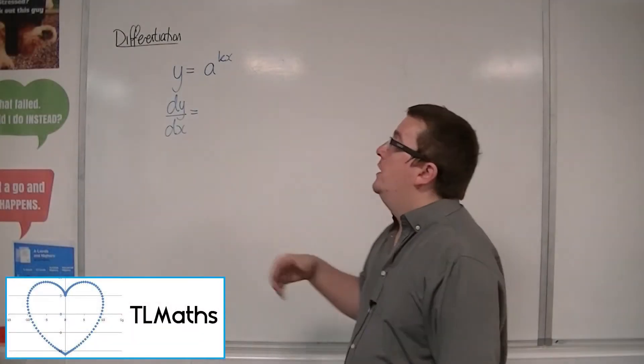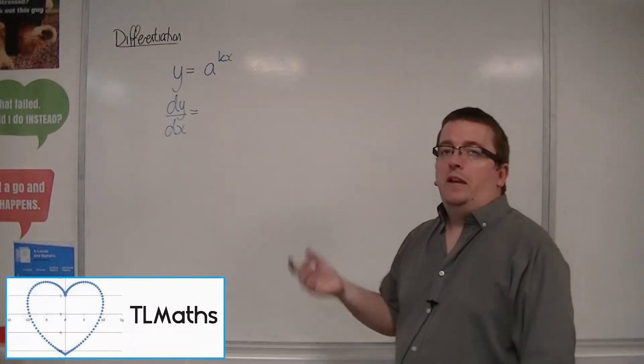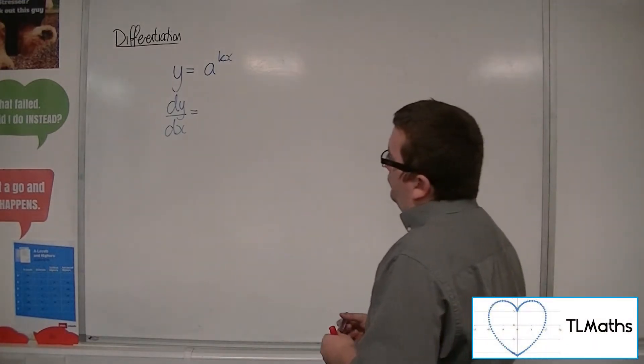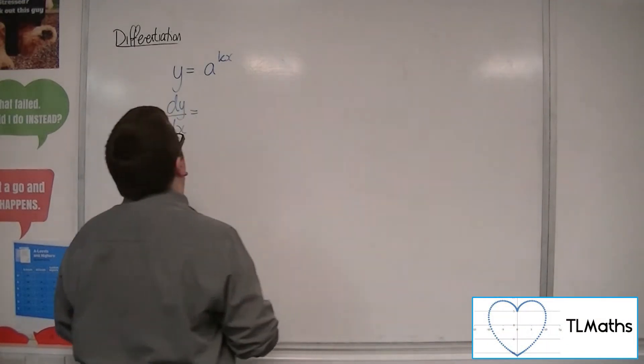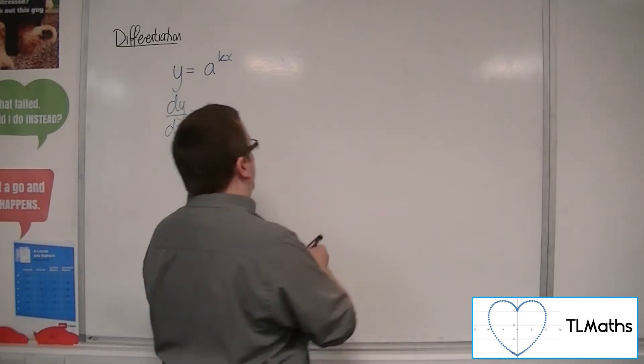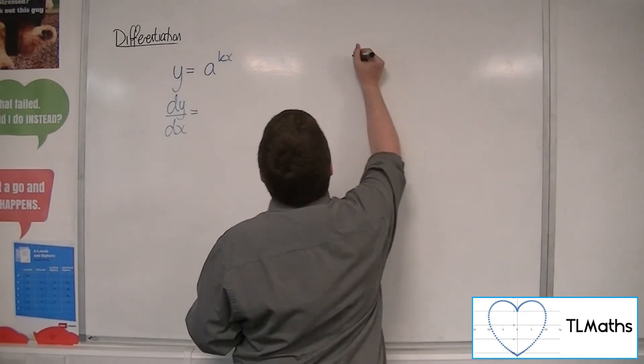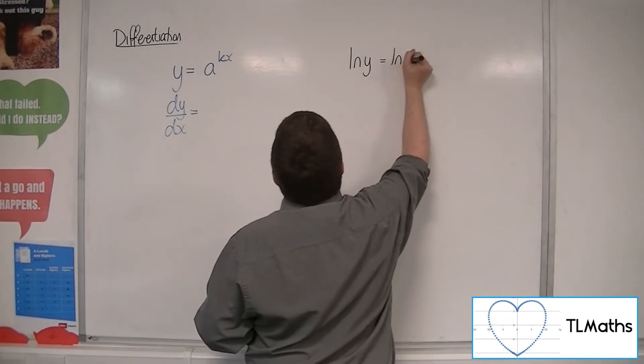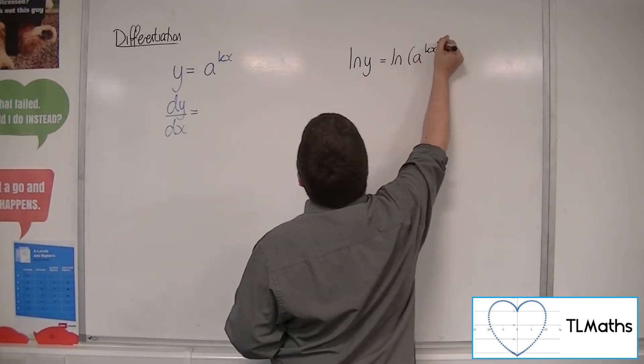Now, differentiating y equals a to the kx is a little bit more fiddly. What we're going to do is take logarithms of both sides. We're going to take natural logarithms of both sides. And so we would have the natural logarithm of y is equal to the natural logarithm of a to the kx.